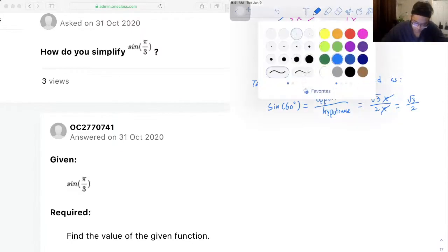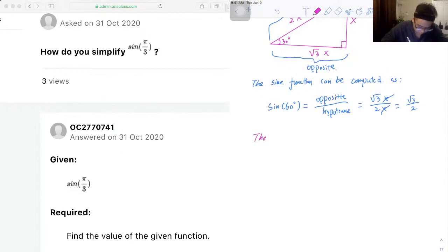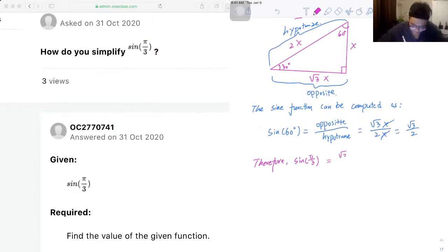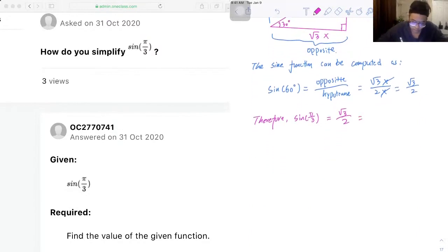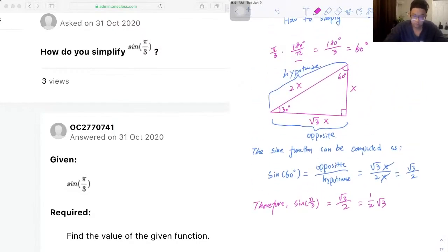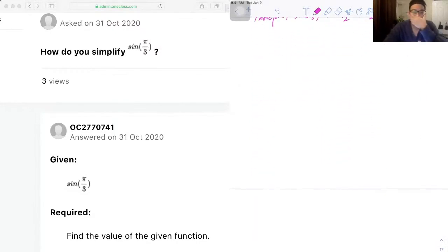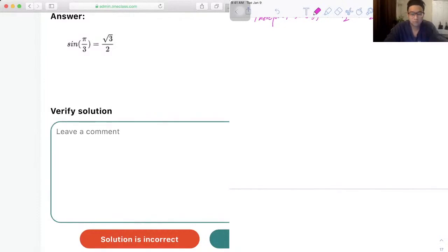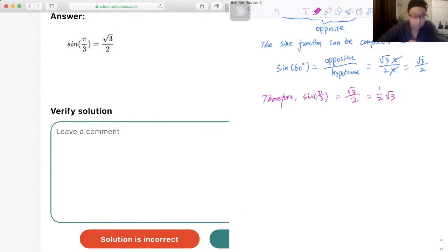Therefore, let's write down our conclusion. Therefore, sine of pi over 3 is equal to root 3 over 2, or we can write it as one half times root 3. Doesn't really matter. Yep, so that's the answer for this question. Thank you.